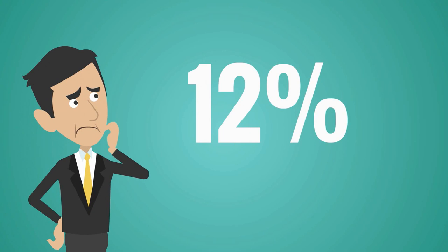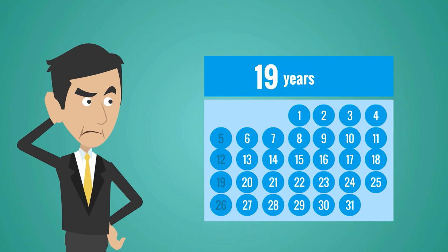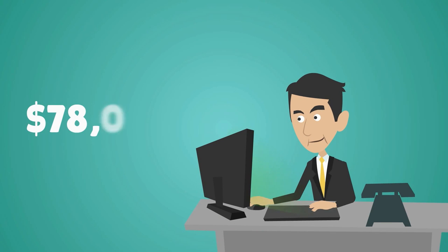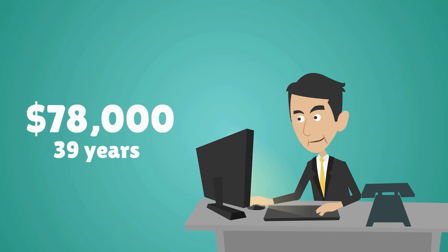He got the same 12% interest rate as James, but he invested 23 more years than James did. So Tom invested a total of $78,000 over 39 years.